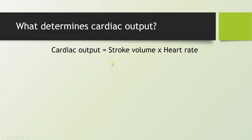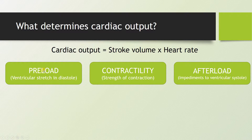Let's review what determines cardiac output. Cardiac output is simply stroke volume times heart rate. When we're trying to resuscitate hypotensive patients on a ward, we're really thinking about how to optimize stroke volume. The major determinants of stroke volume are: preload — the ventricular stretch in diastole; contractility — the strength of contraction; and afterload — the various impediments to ventricular systole. For managing hypotensive patients on the ward, this framework is adequate.